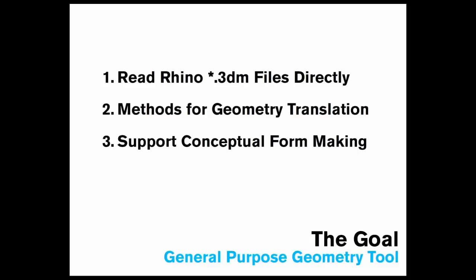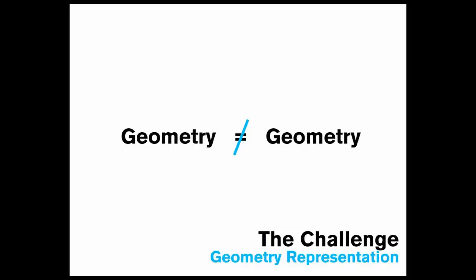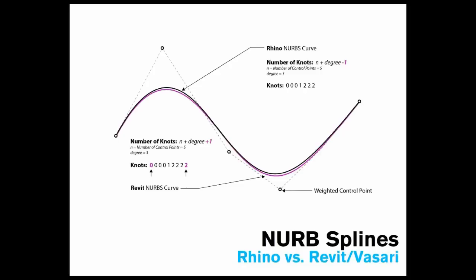We focused on geometry translation first and foremost. The tool is ultimately a way to support conceptual form-making. If you're loosely modeling in the Rhino environment or generating Grasshopper geometry, the intent is to use the open NURBS importer to bring that geometry into the Vasari conceptual massing environment and continue your development there. A lot of the development effort has been creating bridges and processes to accurately bridge these two environments and ensure accurate geometry representation across the two platforms.